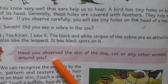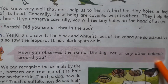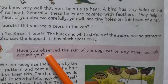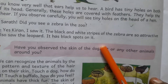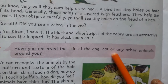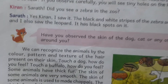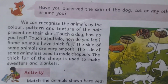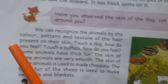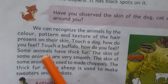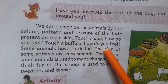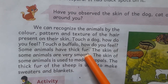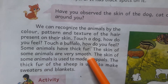Have you observed the skin of the dog, cat, or any other animals around you? The skin of animals is different from ours. We can recognize animals by the color, pattern, and texture of the hair present on their skin. Touch a dog — how do you feel? Touch a buffalo — how do you feel? Some animals have thick fur, and the skin of some animals is very smooth.